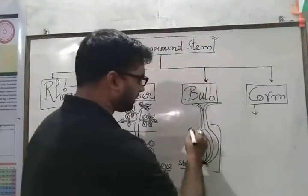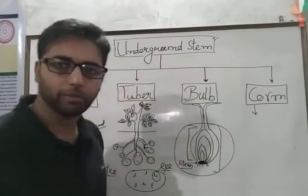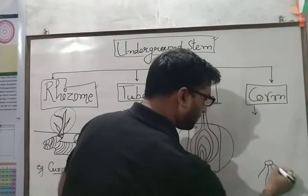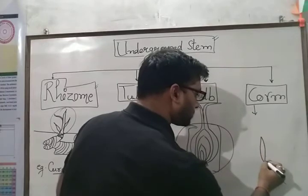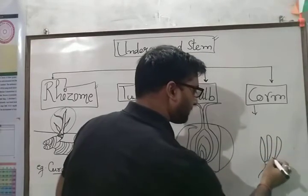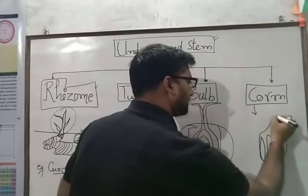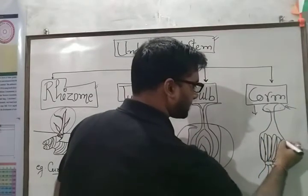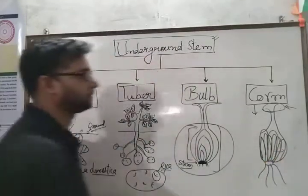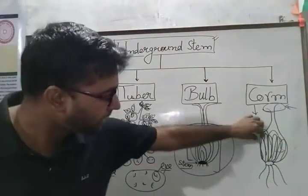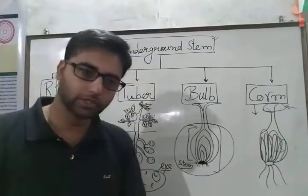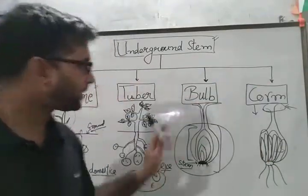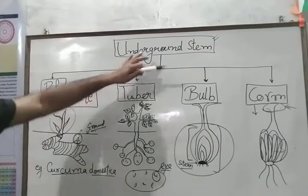Now, corm. It is another structure like a bulb, but a slight difference is that it has many small, dense particles and flowers at the top — many small particles arranged like this. This is a corm-like structure. Each solid part, when detached from the parent and sown in the soil, eventually grows into the matured one. So, this is all about the underground stem.